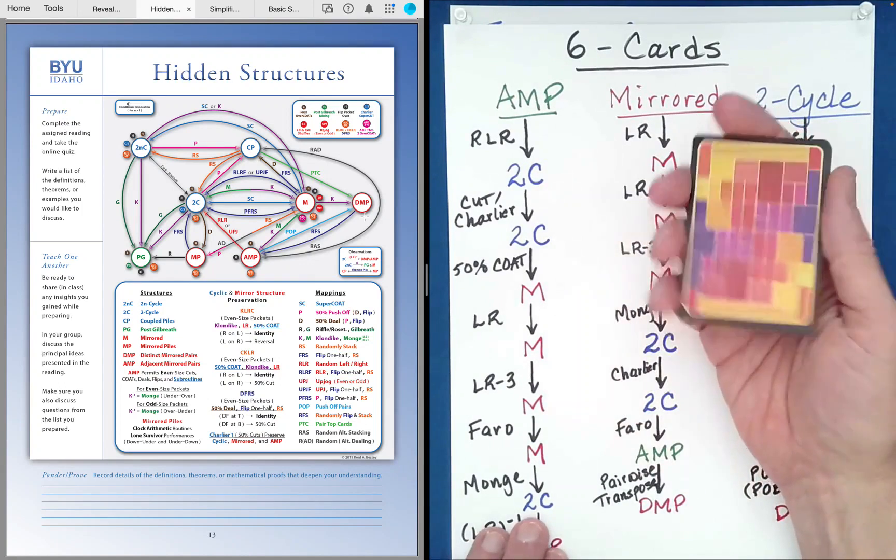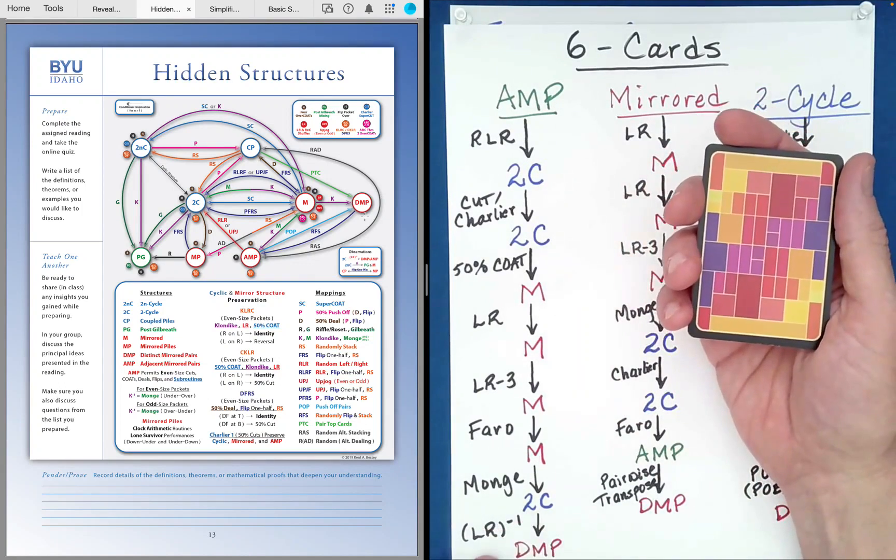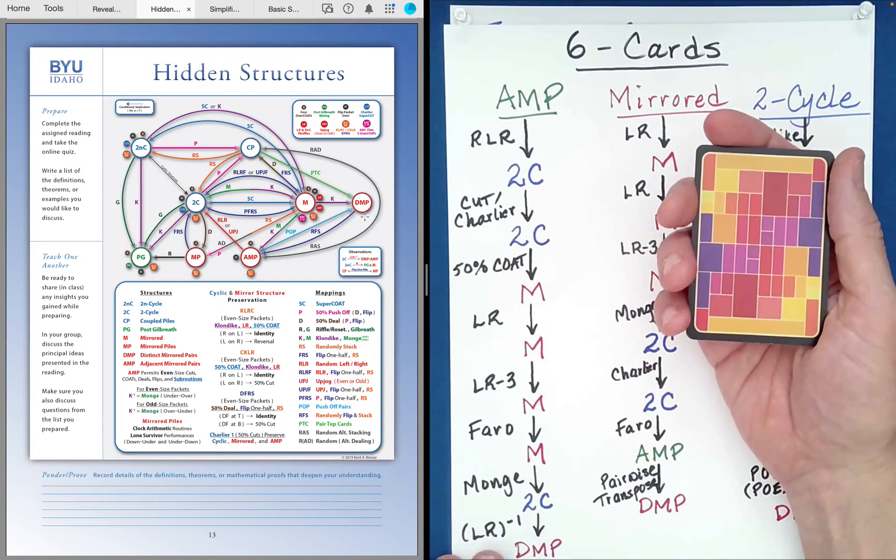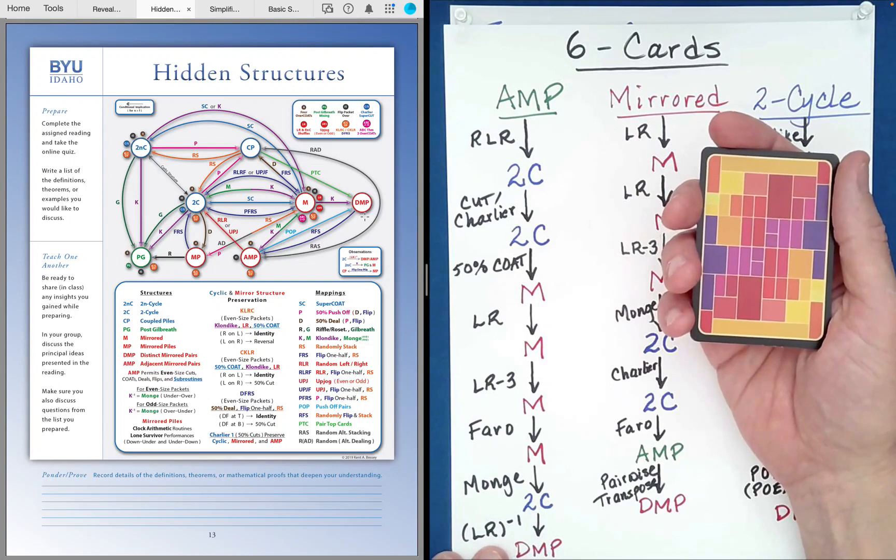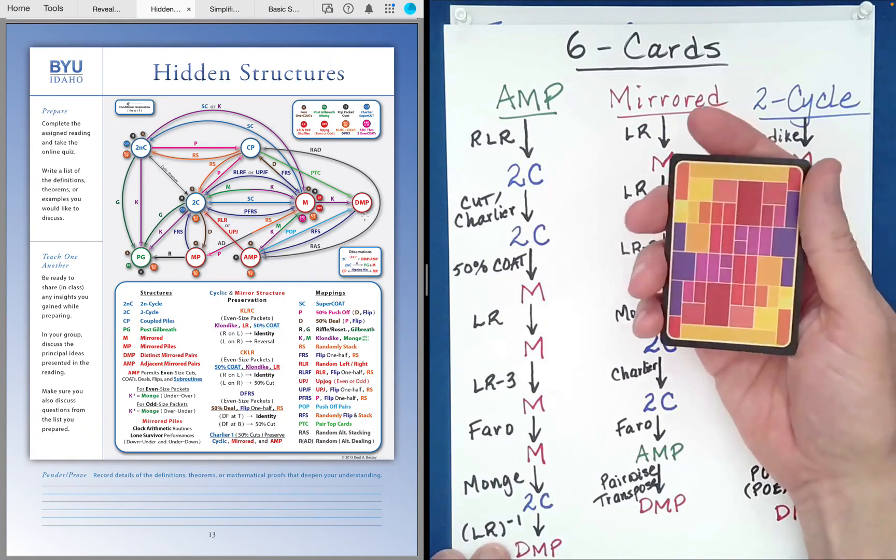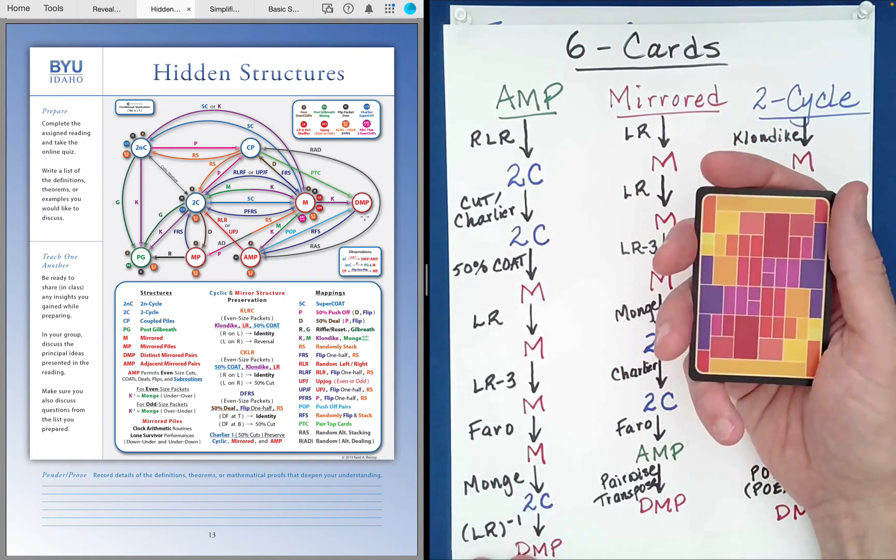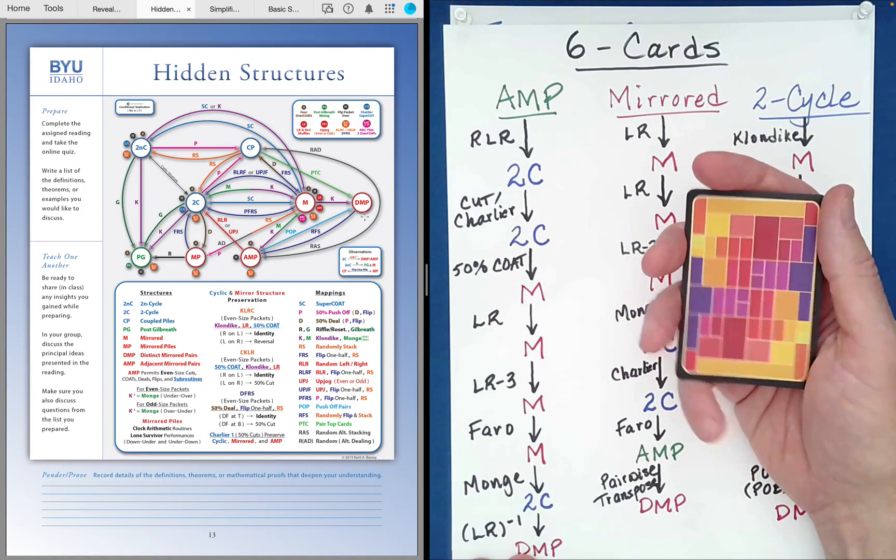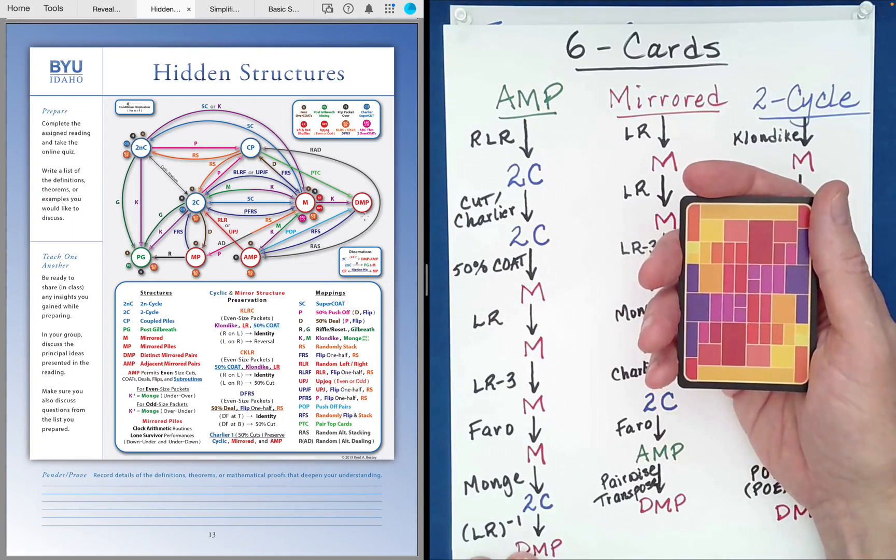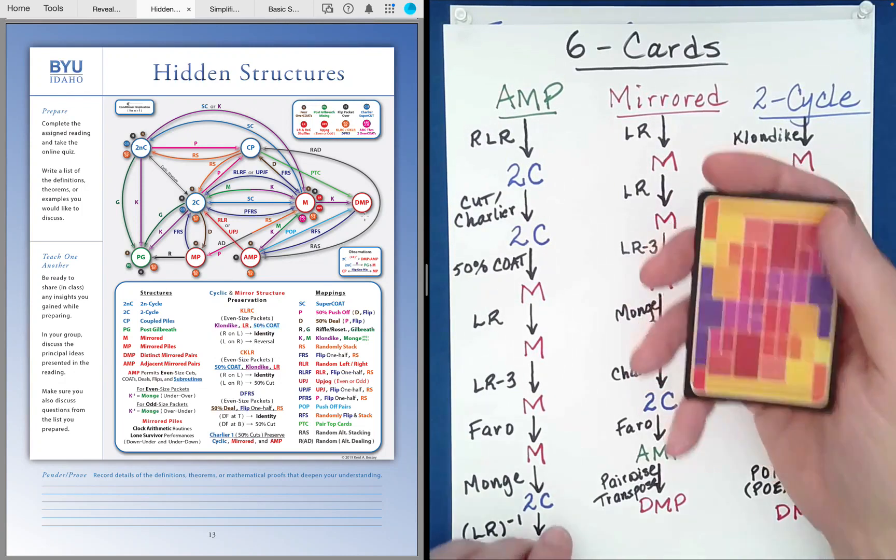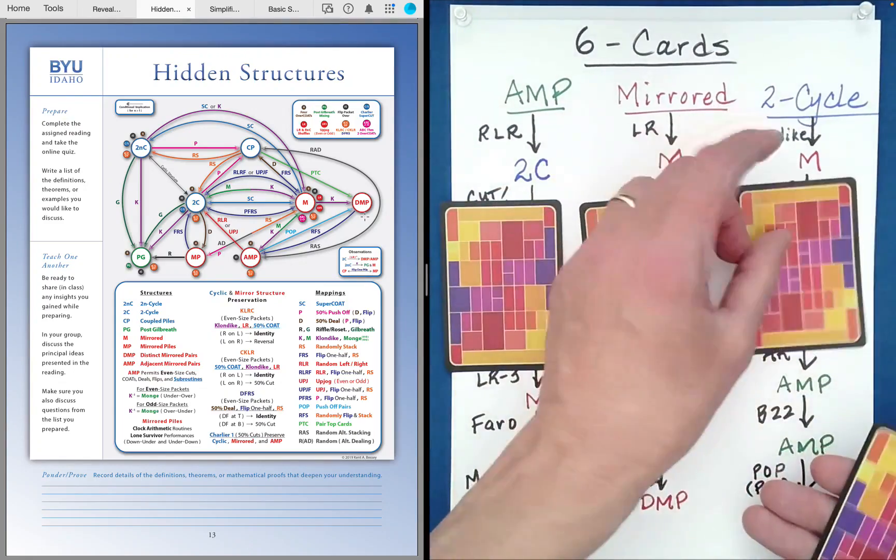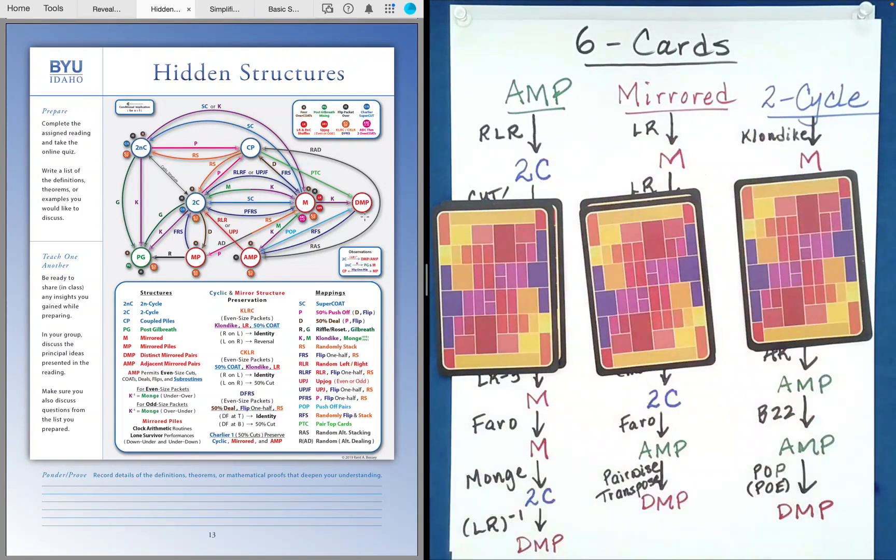So here we're starting at a two-cycle. We have a two-cycle now. Okay? So you can do something called an LR inverse. Okay? And so the LR inverse is, as you might guess, it's a shuffle that undoes the effect of an LR shuffle. But the mechanics are as follows. You have to be aware of how many cards you have. We have six. And you divide that by two. So that's three. So what we're going to do is we're going to deal out the cards into three piles. One, two, three. One, two, three.